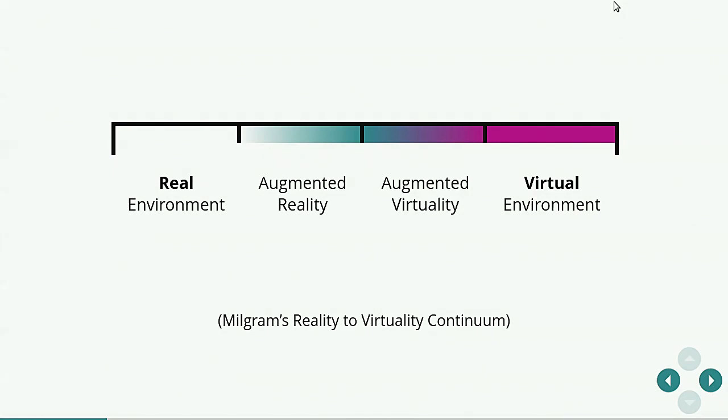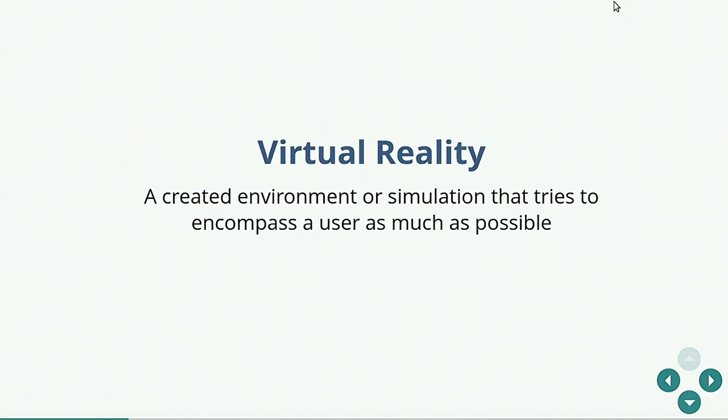So first, terminology. So this is, I have no idea who Milgram is, but I thought this was a handy spectrum to have. So on the left you have reality, right? IRL. And then on the right you have a virtual environment. So you can't see anything that's real. You're just looking at a bunch of 3D generated nonsense, right?